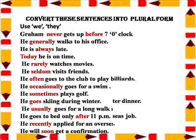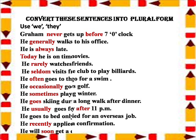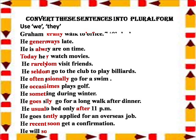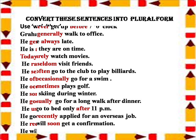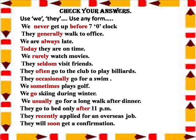Now let's check our answers. As I told you, we can use either 'we' or 'they.' We never get up before seven o'clock. They generally walk to office. We are always late. Today they are on time. We rarely watch movies. They seldom visit friends. They often go to the club to play billiards.